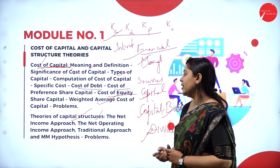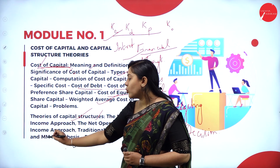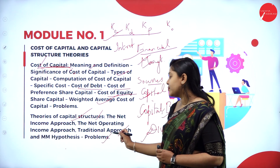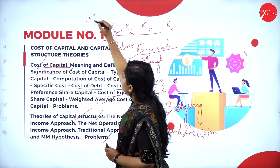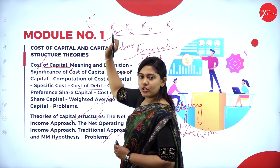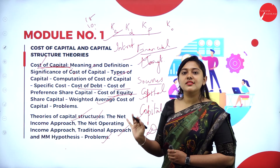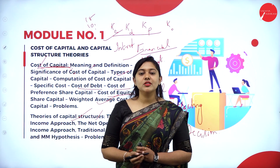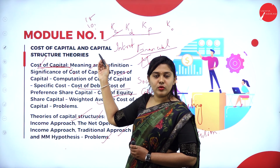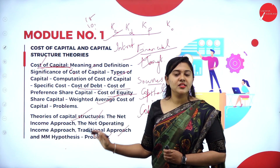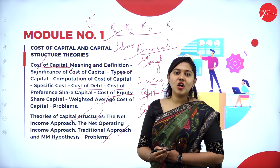Next we have theories of capital structure: the Net Income (NI) approach, the Net Operating Income (NOI) approach, the traditional approach, and the Modigliani-Miller (MM) hypothesis. This chapter consists of a 15-mark question, a 10-mark question, and theory questions. So this chapter is very important — 15 marks plus 10 marks is 25 marks, and with theory it will be around 30 marks. If you study just this one unit, you can easily pass the examination.